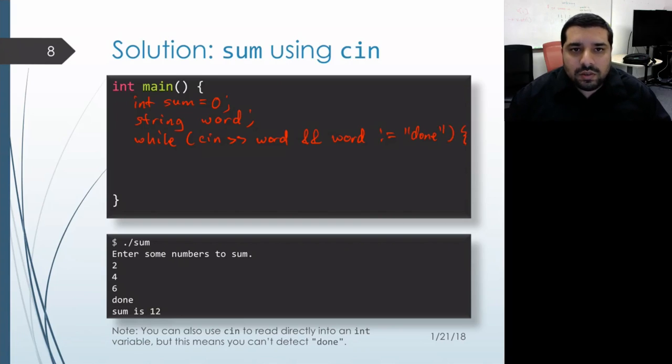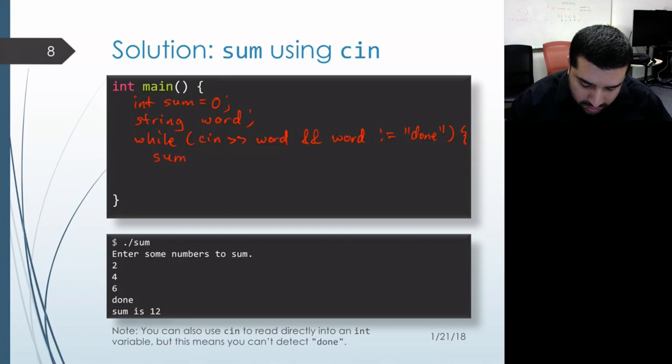And if it's not equal to done, then what we'll do is call S2i on it and then add it to our running sum.